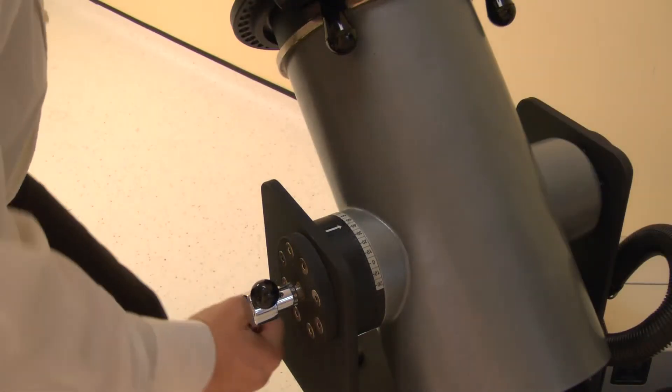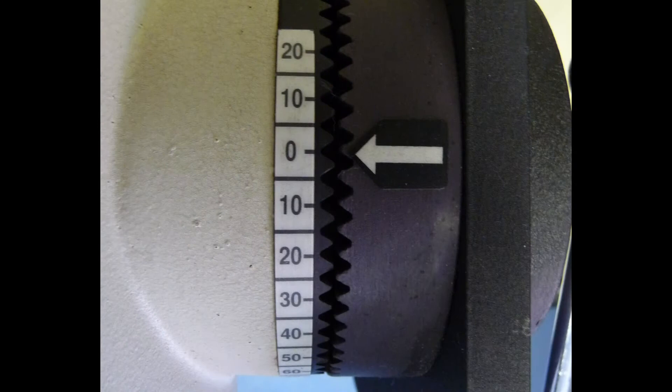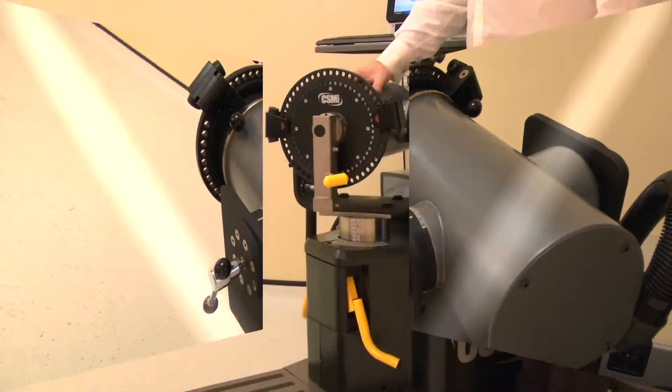Now set the dynamometer tilt. Release the locking handle then change. For the knee, adjust the tilt angle to 0 degrees. Lock by tightening the handle.